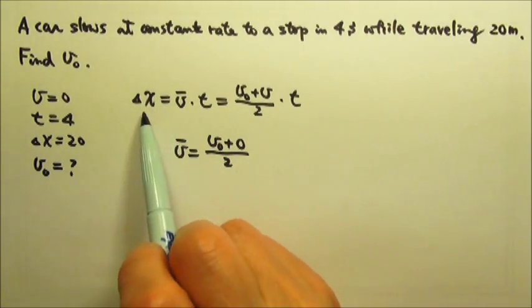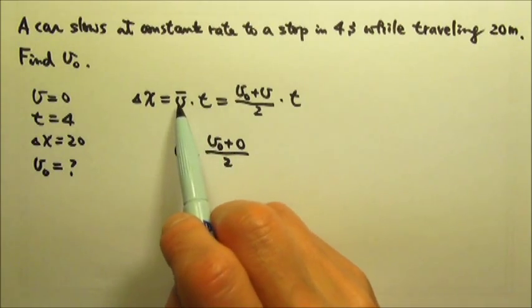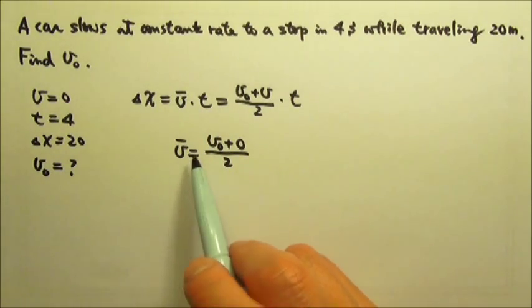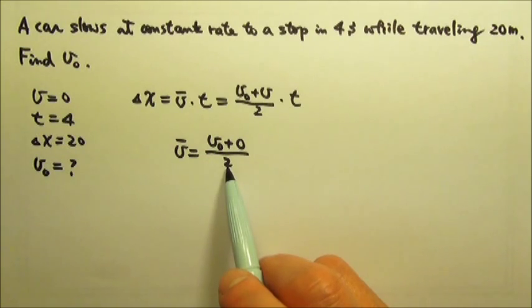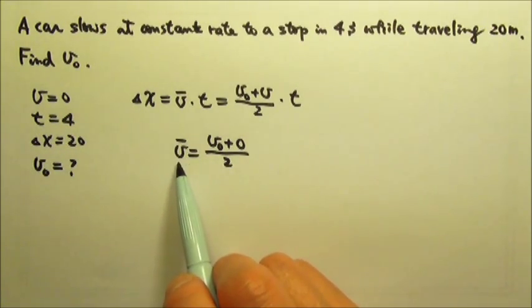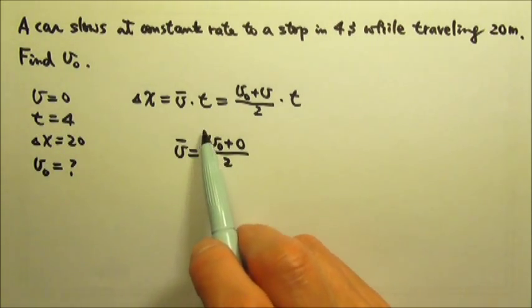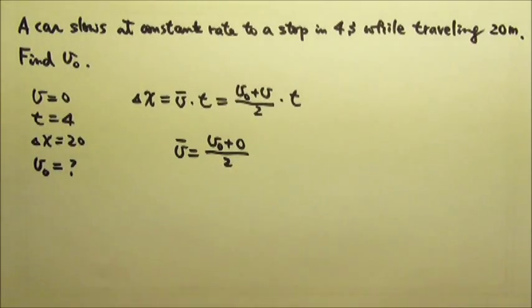So when we divide the distance traveled by the time and get the average velocity, it is the initial velocity divided by two. So if we just multiply the average velocity by two, we will get the answer for the initial velocity.